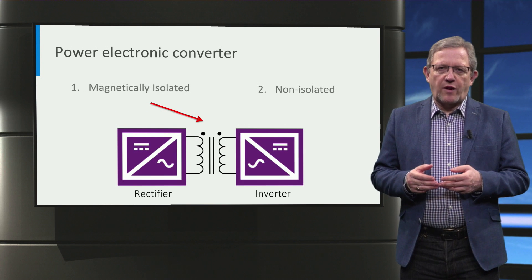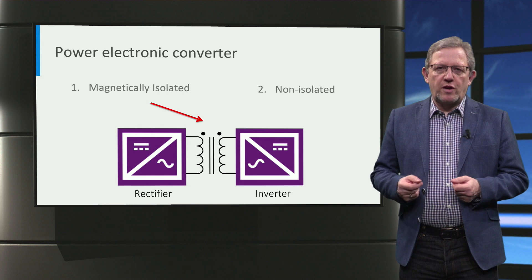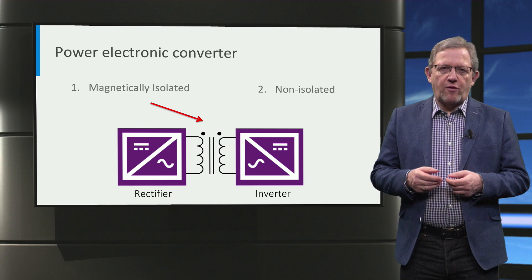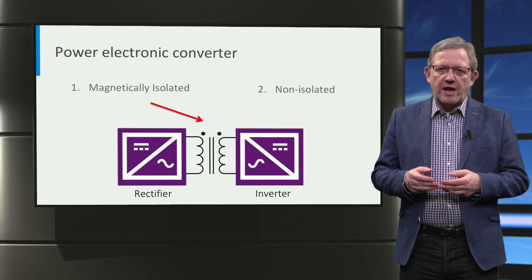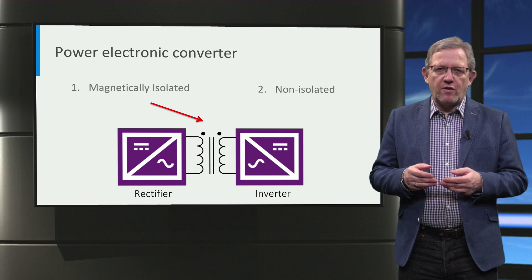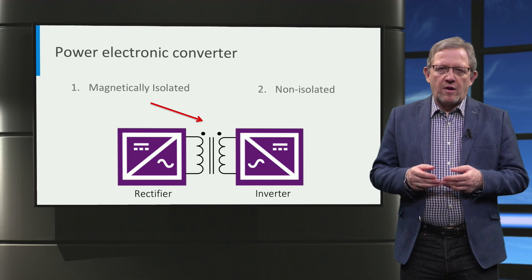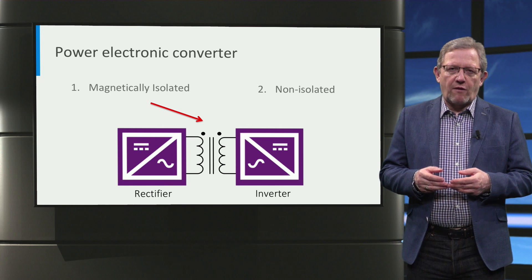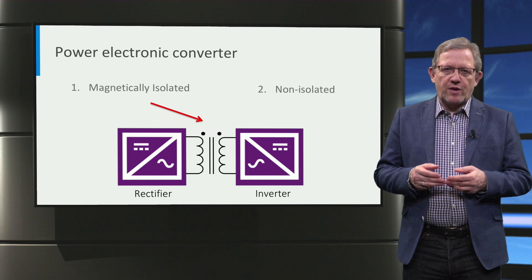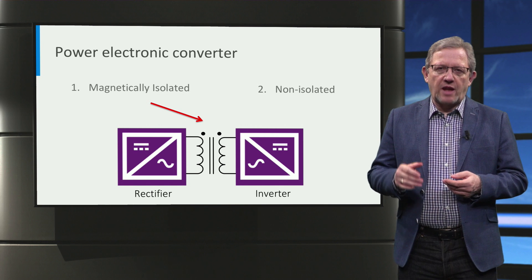A third way to classify converters is based on whether there is a transformer isolation between the input and output. Isolation in power converters is primarily required for safety reasons. For example, all mobile phone chargers are isolated so that the 5V low voltage output is safe to touch even though the input is from 110 to 230V AC. Furthermore, the transformer used for galvanic isolation can have a different turn ratio between input and output that can help in stepping up or stepping down the voltage.